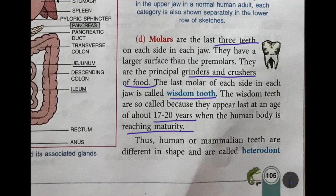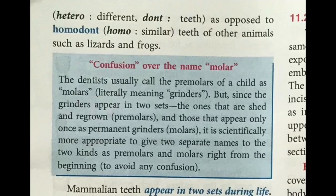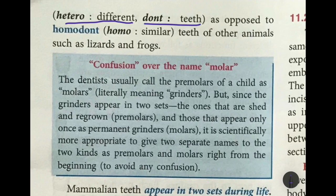Human or mammalian teeth are different in shape and are called heterodont — 'hetero' means different, 'dont' means teeth. There is another type of teeth found in some animals like lizards and frogs where all teeth are the same type, so they are known as homodont — 'homo' meaning similar.